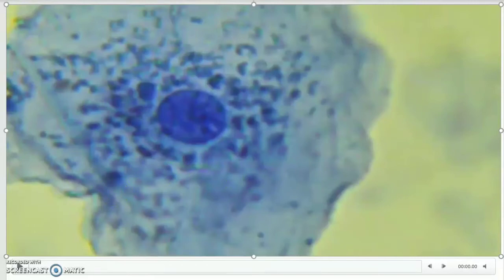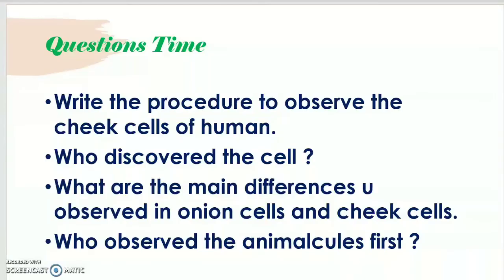We have now seen both plant cells in the onion peel and animal cells in the cheek cells. Now observe the following questions: Write the procedure to observe cheek cells of a human. Who discovered the cell first? What are the main differences you observed between onion cells and cheek cells? Who observed the animalcules first?